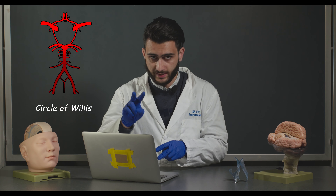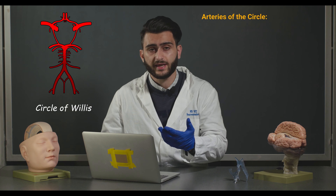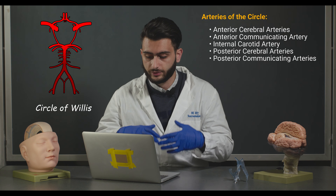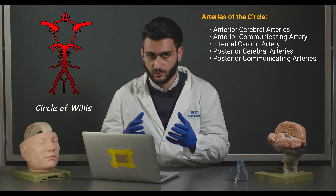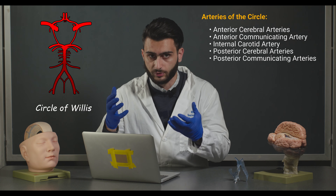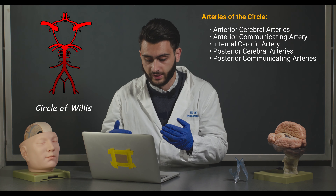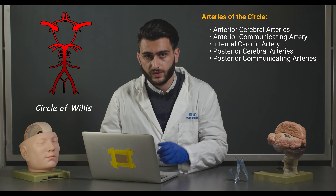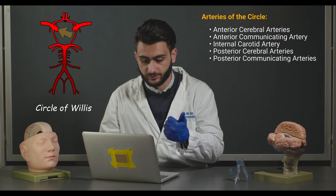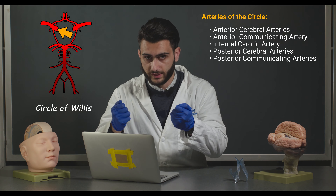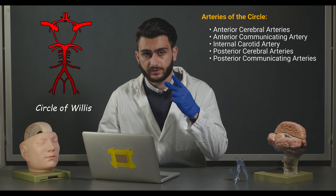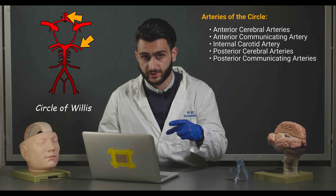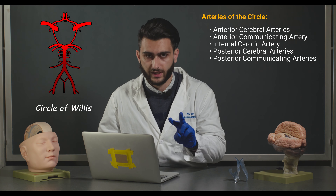The Circle of Willis has two main exit points: one, the anterior cerebral artery, and two, the posterior cerebral artery. The internal carotid artery feeds these cerebral arteries, separate from the cerebellar arteries. For the Circle of Willis there are five main points to remember: one being the internal carotid artery as input; the exits — the anterior cerebral artery and the posterior cerebral artery; and finally the two communicating arteries.